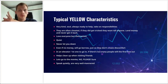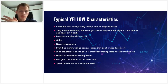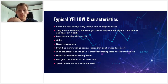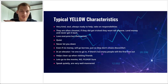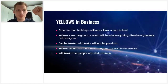Typical yellow characteristics: they're very kind, always ready to help, take on responsibilities. They're often cheated — and if they did get tricked, they won't tell anyone. They're the kind of person that could lend money and might never get it back. They love everyone but themselves. They're very quiet, never let you down — very reliable people. These people are genuinely good people in the full sense of the phrase. Even if they have no money, they'll go borrow just so they don't create discomfort or let you down. In an elevator, they could be the first one in, but if there are too many people, they'll be the first one to leave. They help clean up when visiting friends.